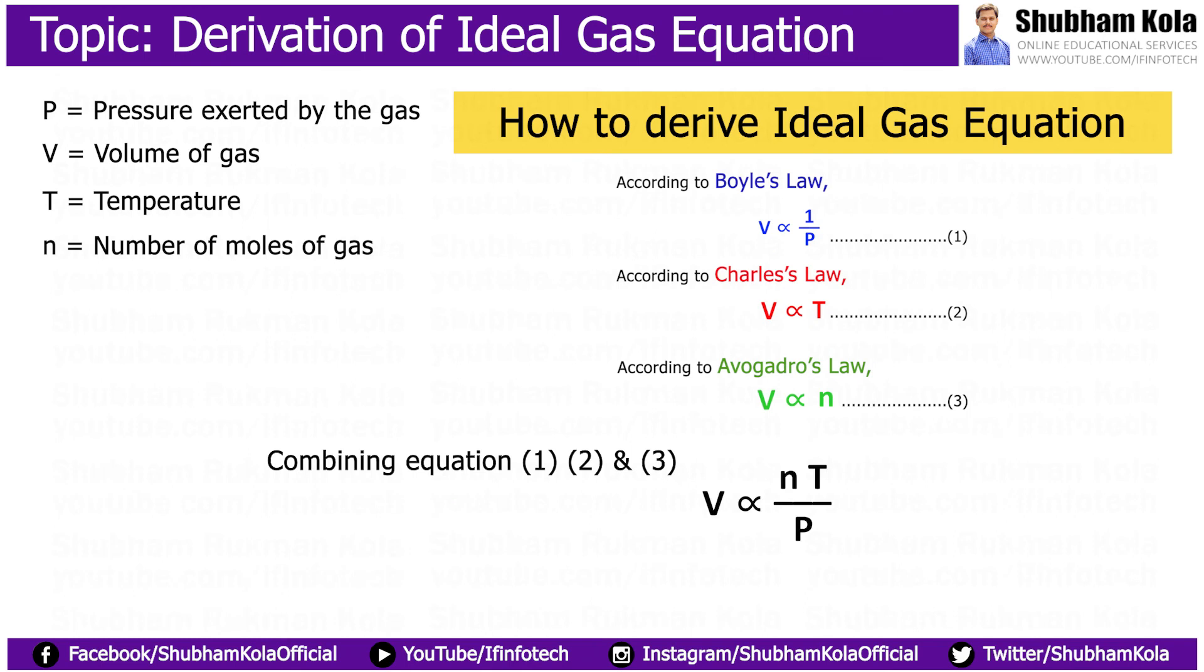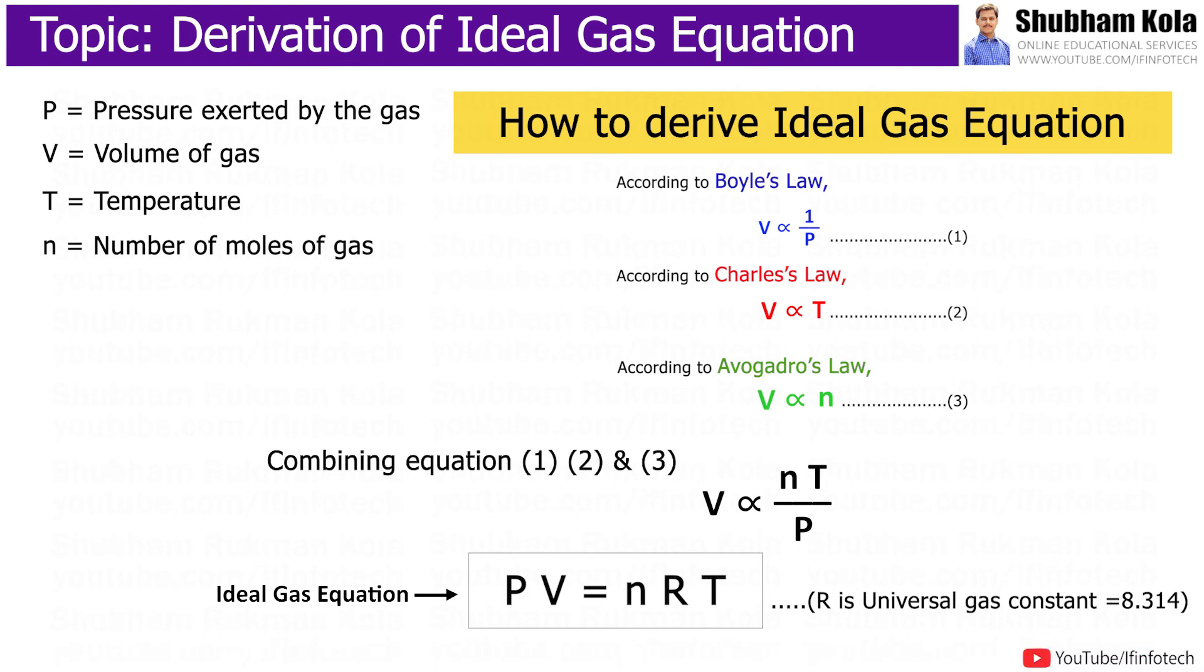Combining all the three equations, we will get the ideal equation of gas as PV is equal to nRT, where R is the universal gas constant, which has a value of 8.314 Joule per mole Kelvin.